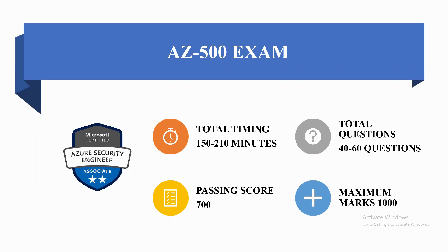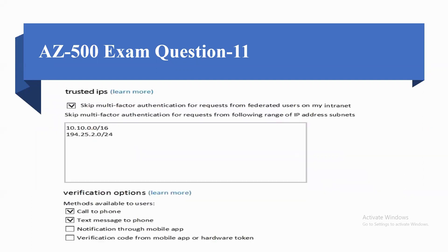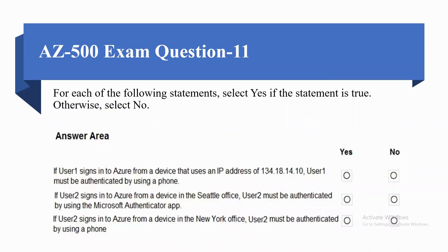Coming to the questions. Your company has two offices in Seattle and New York. Each office connects to the internet by using a NAT device. The offices use the IP addresses shown in the following table. The company has an Azure Active Directory tenant named contoso.com. The tenant contains the users as shown in the following table. This is the trusted IPs question.